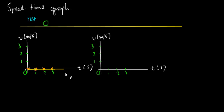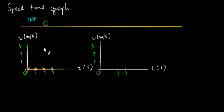So next time you see a line that goes along the time axis on the speed-time graph, you can tell right away that it means the body is at rest.